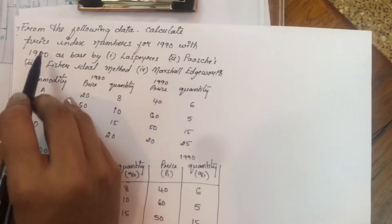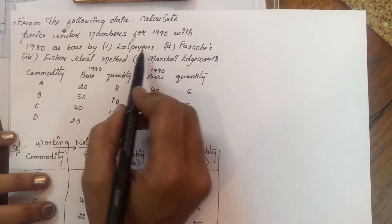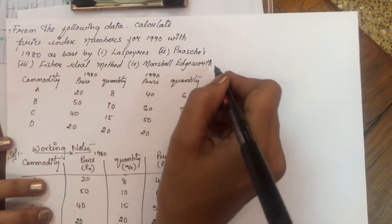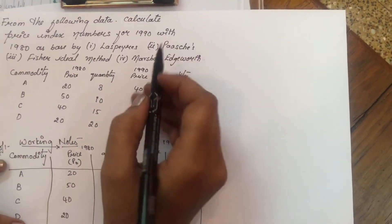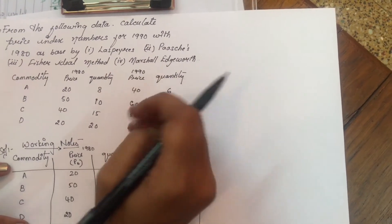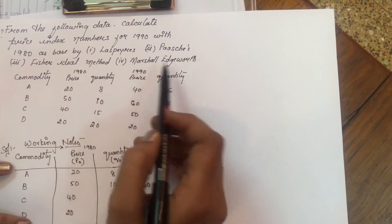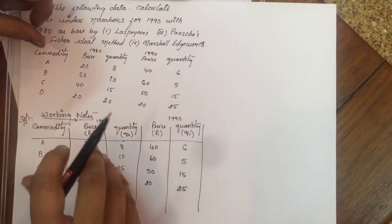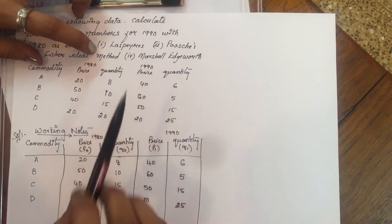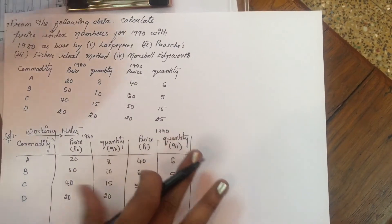From the following data, calculate price index number for 1990 with 1980 as base by Laspeyres, Paasche, Fisher Ideal method, and Marshall Edgeworth. So basically, this is a long answer. Commodity is given, price quantity of 1980, price quantity of 1990 is given. So we have to decide our base price and current price.